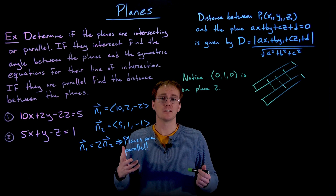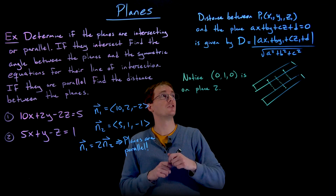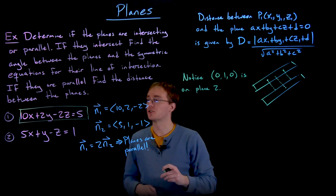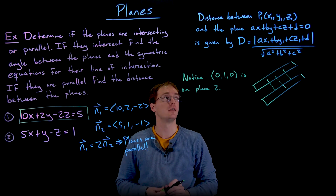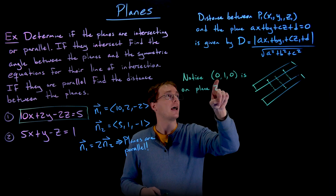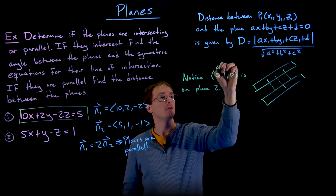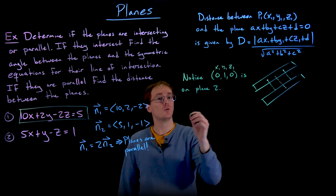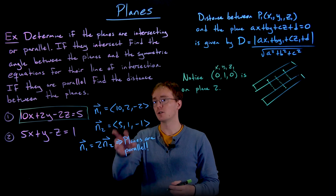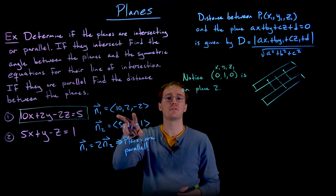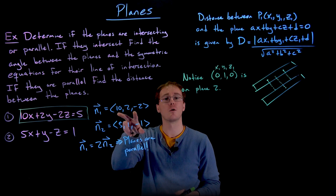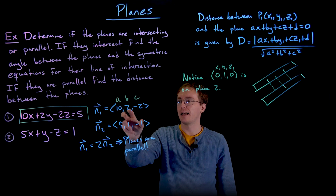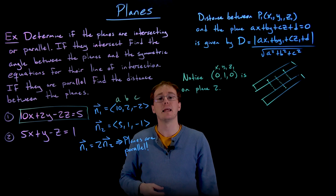So now our problem has turned into: what is the distance between the point (0, 1, 0) and our first plane 10x plus 2y minus 2z equals 5? We know our x1, y1, z1 values are 0, 1, and 0 respectively. We still need our a, b, and c values, which come from the coefficients in front of x, y, and z for our first plane — the normal vector for that plane. So a is 10, b is 2, and c is negative 2.